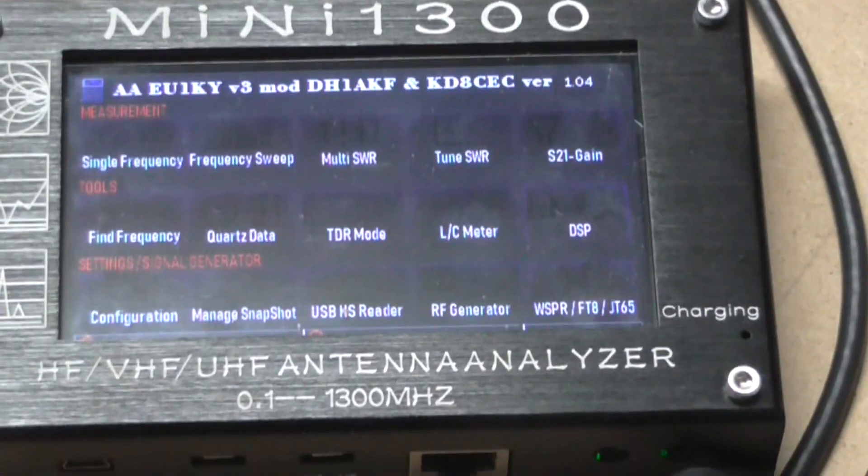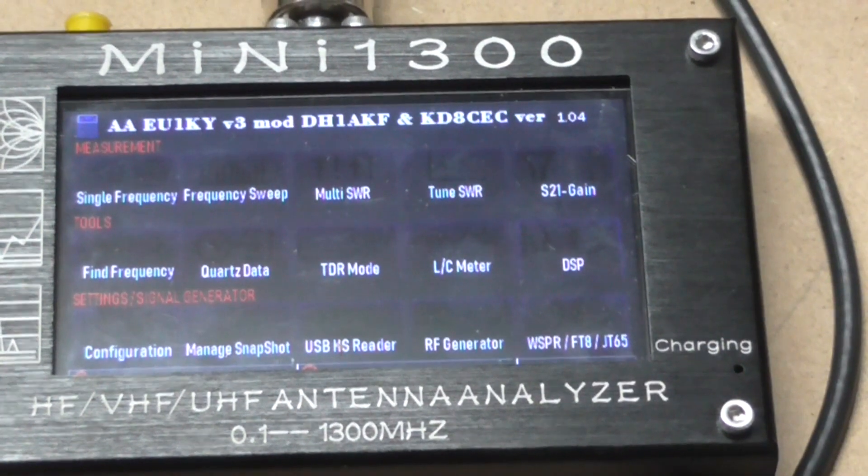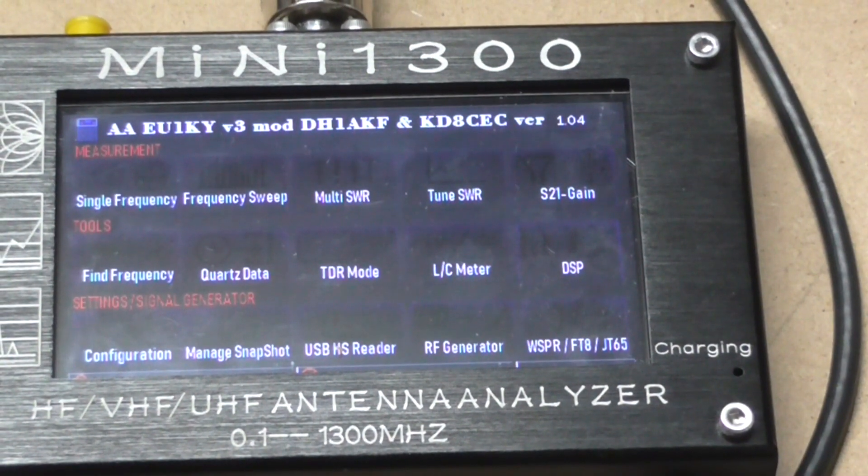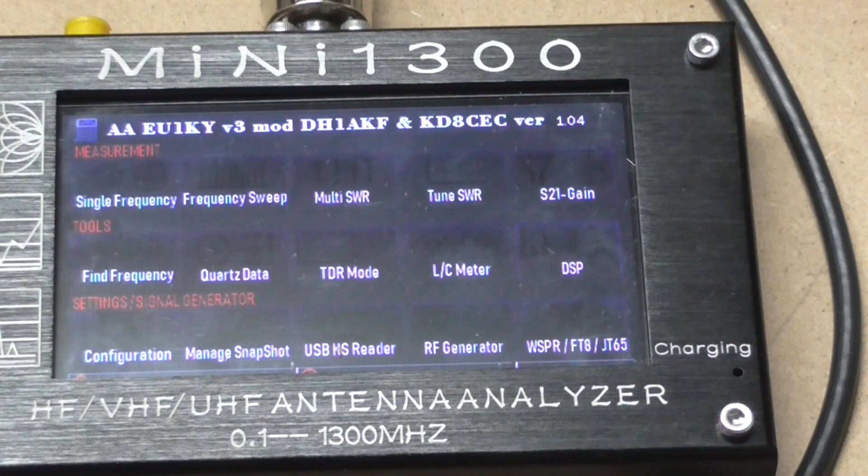Here you will see the Mini 1300 HF/VHF/UHF antenna analyzer. It's rated from 0.1 to 1300 MHz, 1.3 gigahertz. Sadly I don't believe this is an original device - it won't get to 1300 megs, in fact it tops out at 999 megs.